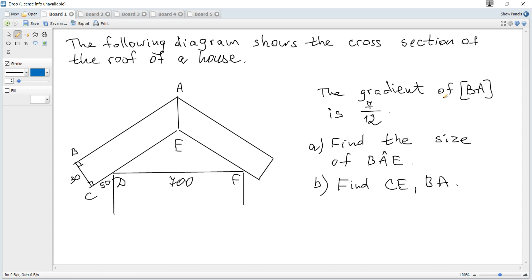The following diagram shows the cross-section of the roof of a house. It is given that it's symmetrical about the line AE. The gradient of the line BA is 7 over 12. Question A: Find the size of the angle BAE.